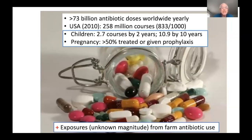How much more? A recent estimate was greater than 73 billion antibiotic doses worldwide every year — more than 10 antibiotic pills for every man, woman, and child on earth — and the numbers are going up. In the United States, the CDC counted 258 million antibiotic courses in 2010: 833 courses per thousand population, nearly five courses for every six people. In children in the first two years of life, they're getting nearly three courses of antibiotics. By age 10, they get 10 courses. During pregnancy, more than 50% are treated with antibiotics or given prophylaxis. There's also exposure from antibiotics used on the farm.